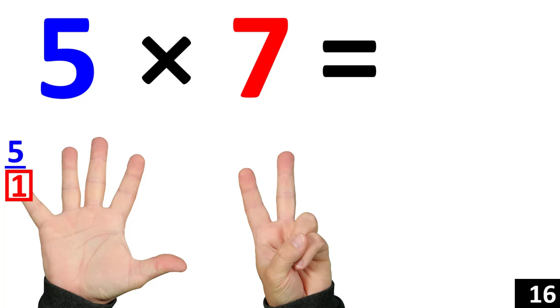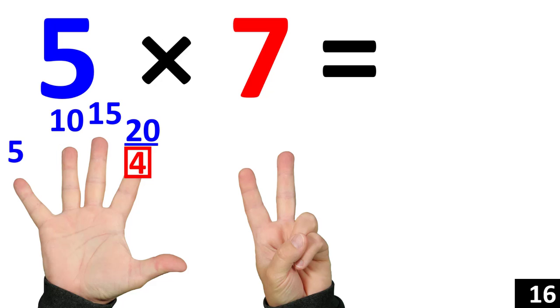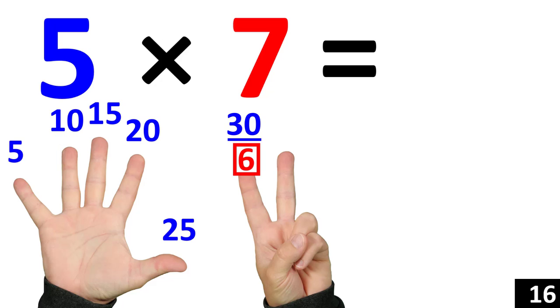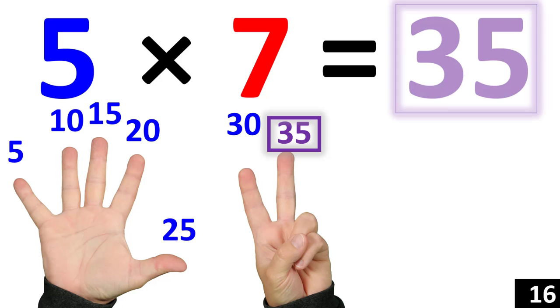5 times 7 is the same thing as counting by 5 seven times. 5. 10. 15. 20. 25. 30. 35. Therefore 5 times 7 is equal to 35.